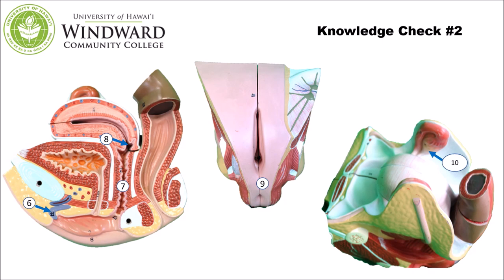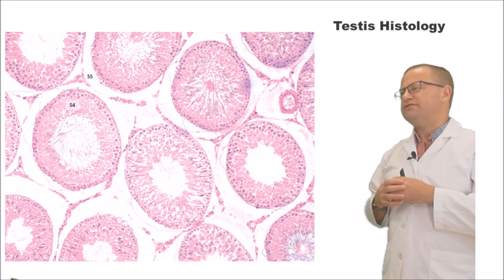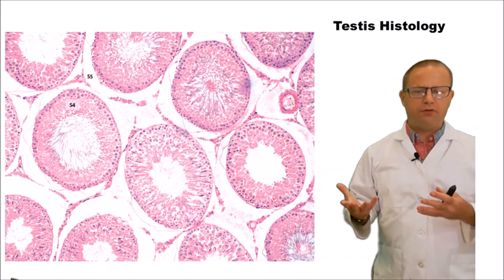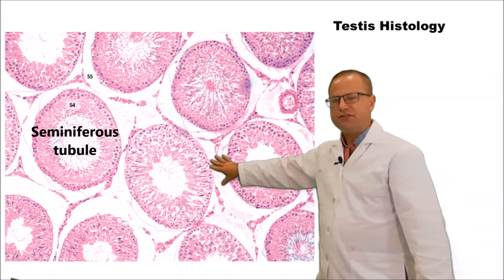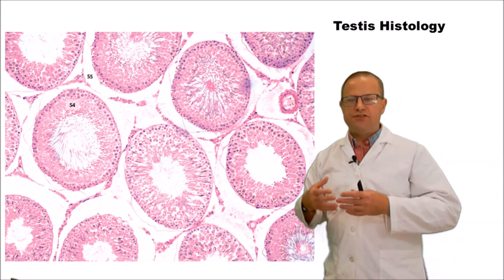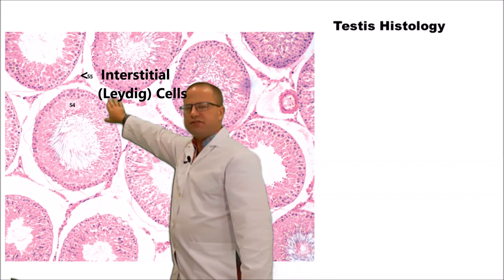Now we'll transition to the histological anatomy of the male and female reproductive tracts. Starting with males: the male gonads are the testes, divided into seminiferous tubules where spermatozoa are made. In between the tubules is an interstitial area containing interstitial cells, also known as Leydig cells, which produce testosterone under the guidance of LH. At 400x, you can see the lumen of the seminiferous tubule in the center and the Leydig cells outside, secreting testosterone under LH.